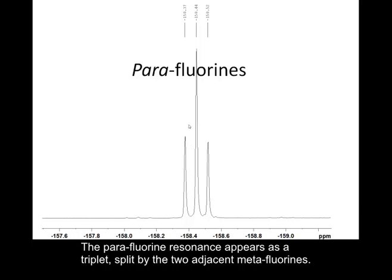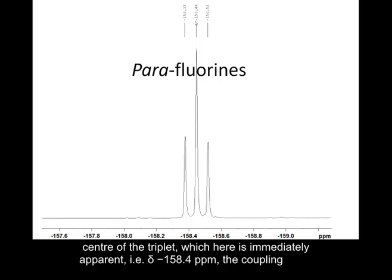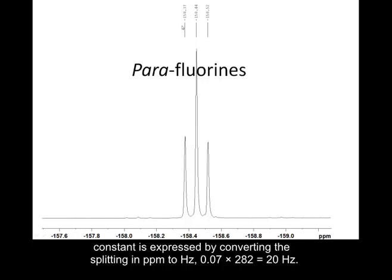If we move on and look at the next resonance, that is the para-fluorine. The para-fluorine appears as a triplet, because it is split by the two equivalent meta-fluorines — the same rule you'd expect in proton NMR spectra. The middle resonance is the chemical shift of this triplet at minus 158.4 ppm. The coupling constant is the separation between two of these peaks multiplied by 282.4, which, to two significant figures, comes out as 20 Hz.